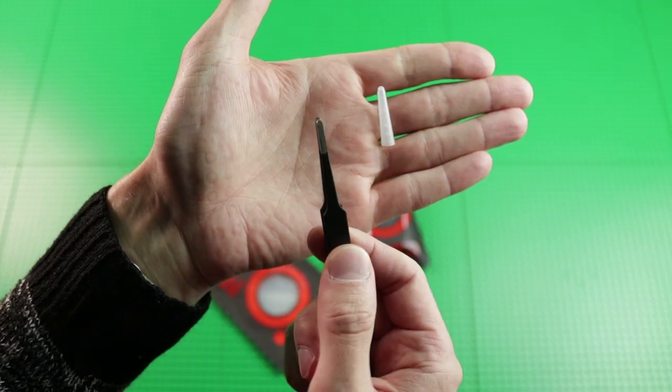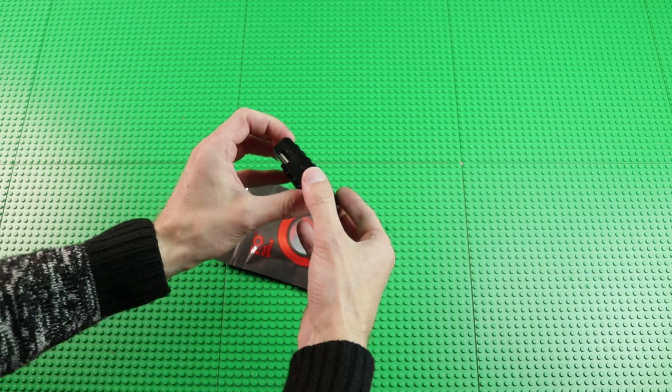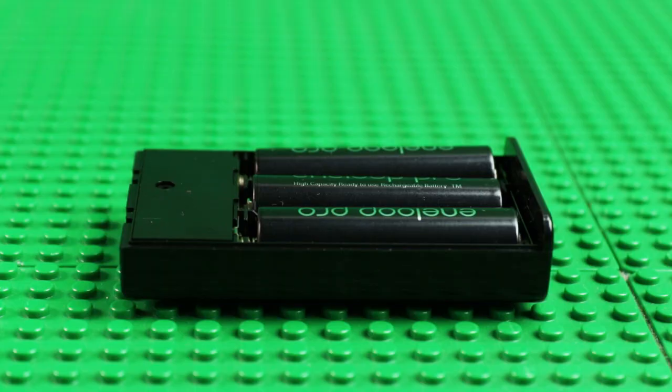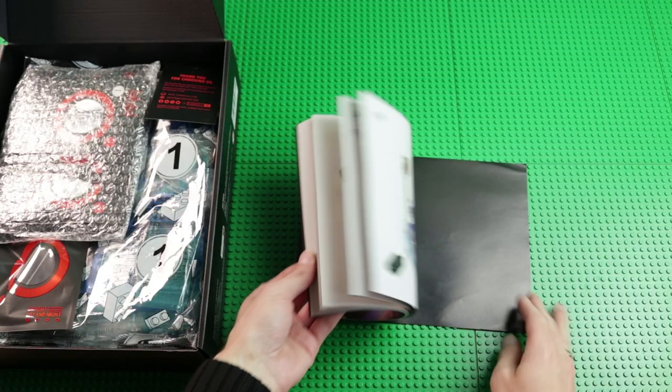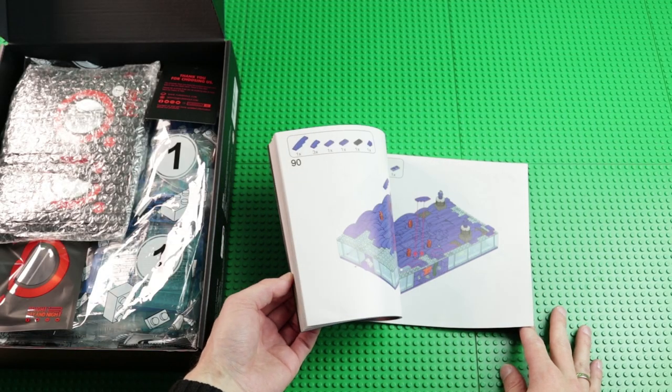One brick separator, one tweezers, and one battery box. Batteries not included. You need three. Slide it to open. Neither print nor sticker in this set.